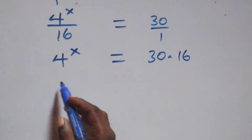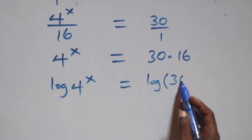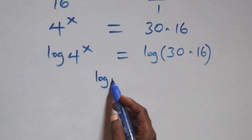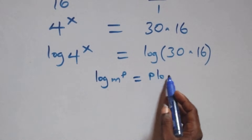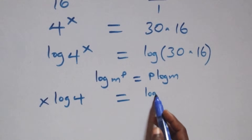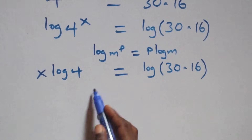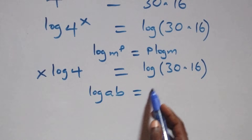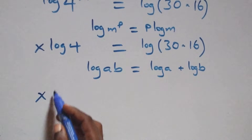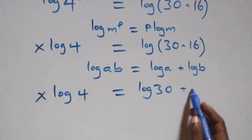Next step, we take the log on both sides: log of 4 raised to power x equals log of 30 times 16. We apply the power rule of logarithms — log n raised to power p is the same as p log n. We also use log(a times b) equals log a plus log b.